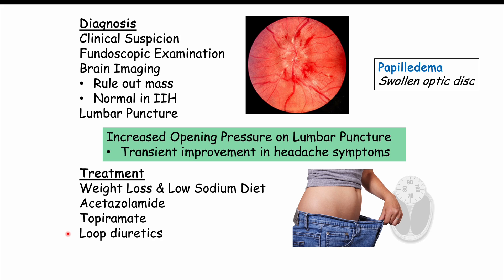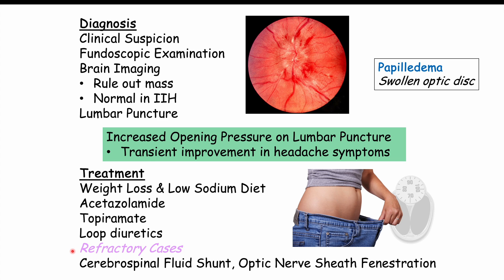Loop diuretics like furosemide can also be used. When combining these treatments, clinicians must monitor for significant reductions in potassium levels. In refractory cases where pharmacological treatments fail and vision loss continues — and vision loss is the most significant clinical feature as it can become permanent — surgery is required. Surgical options include a cerebrospinal fluid shunt and optic nerve sheath fenestration, which reduces pressure on the optic nerve to preserve vision.